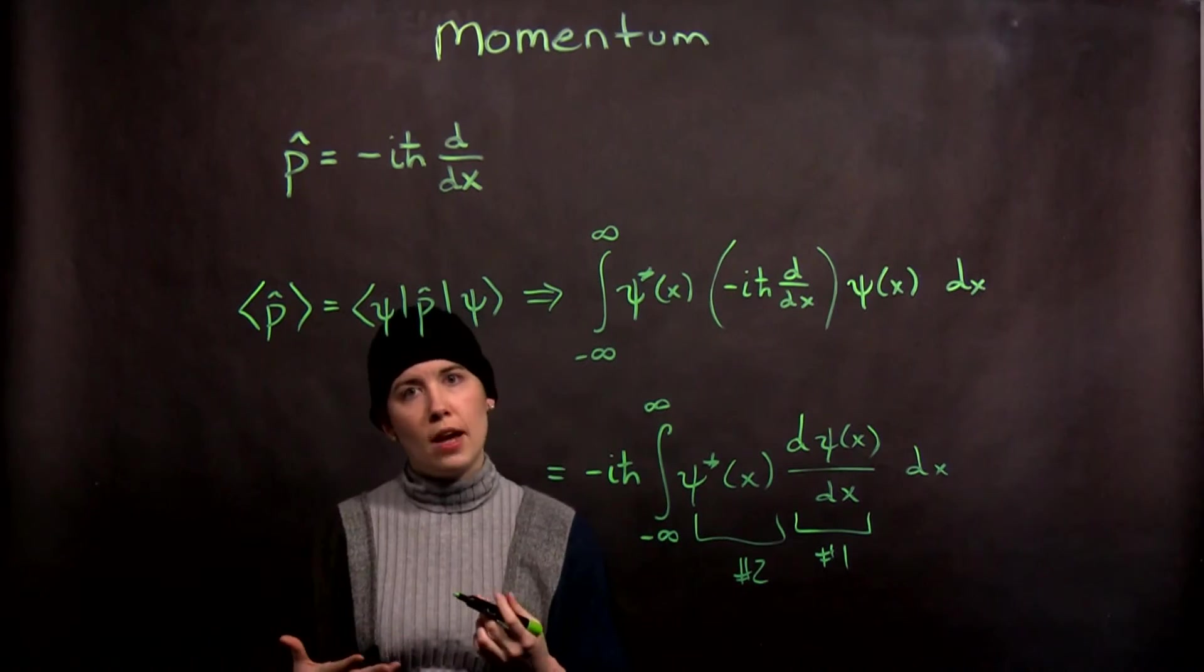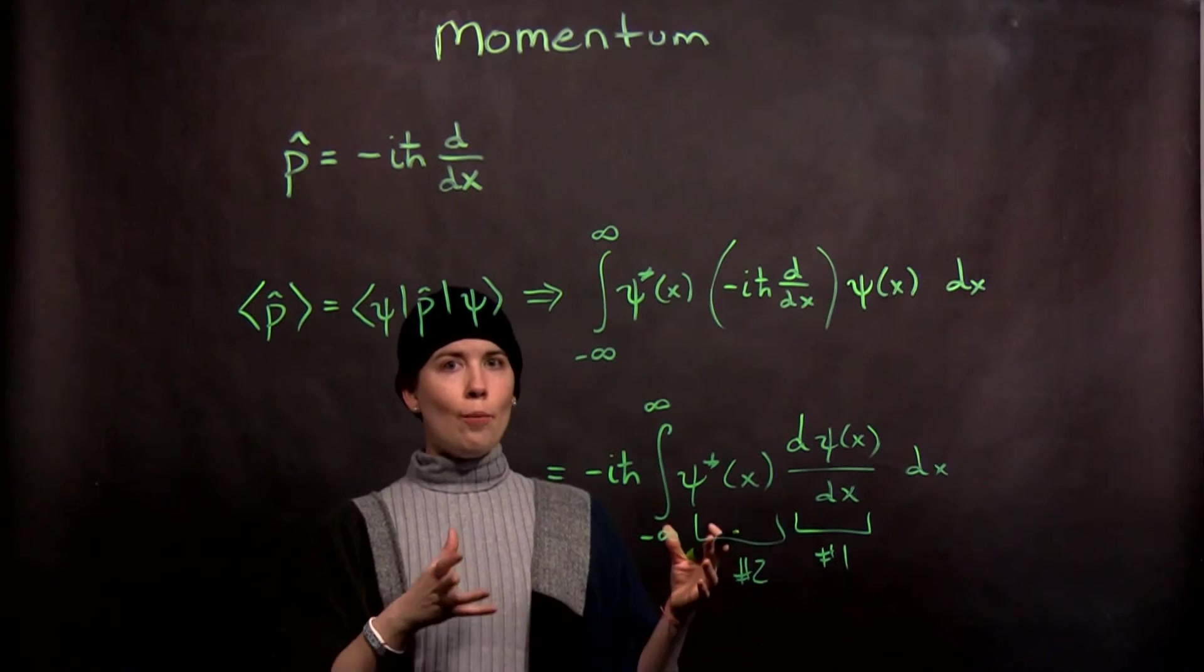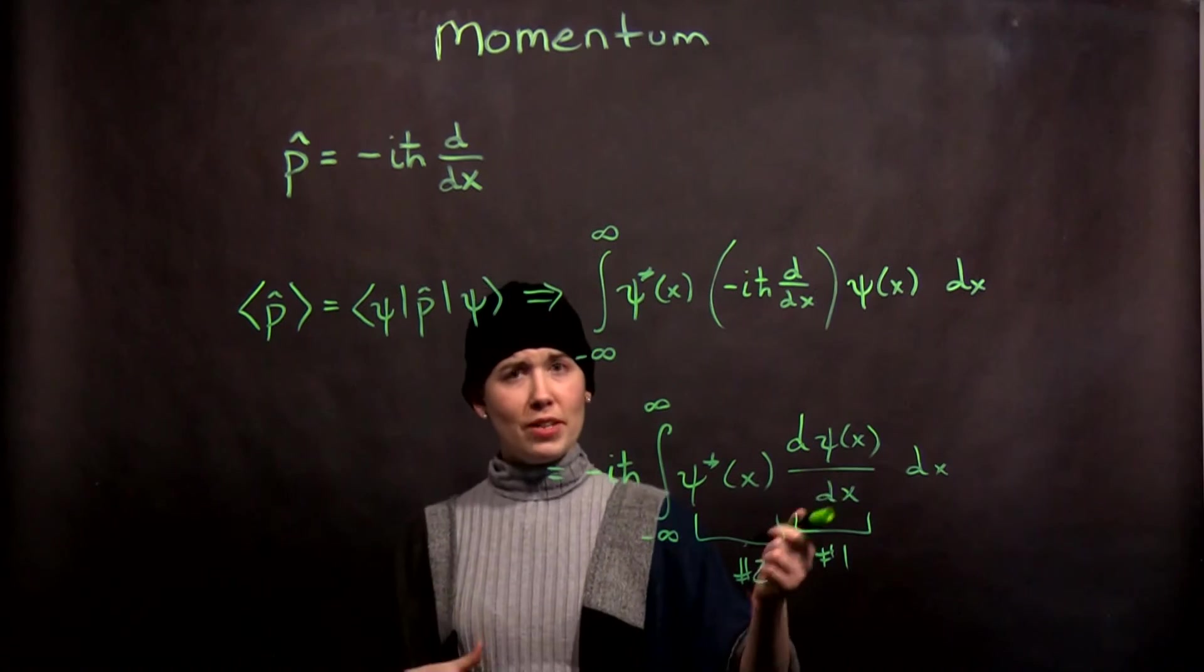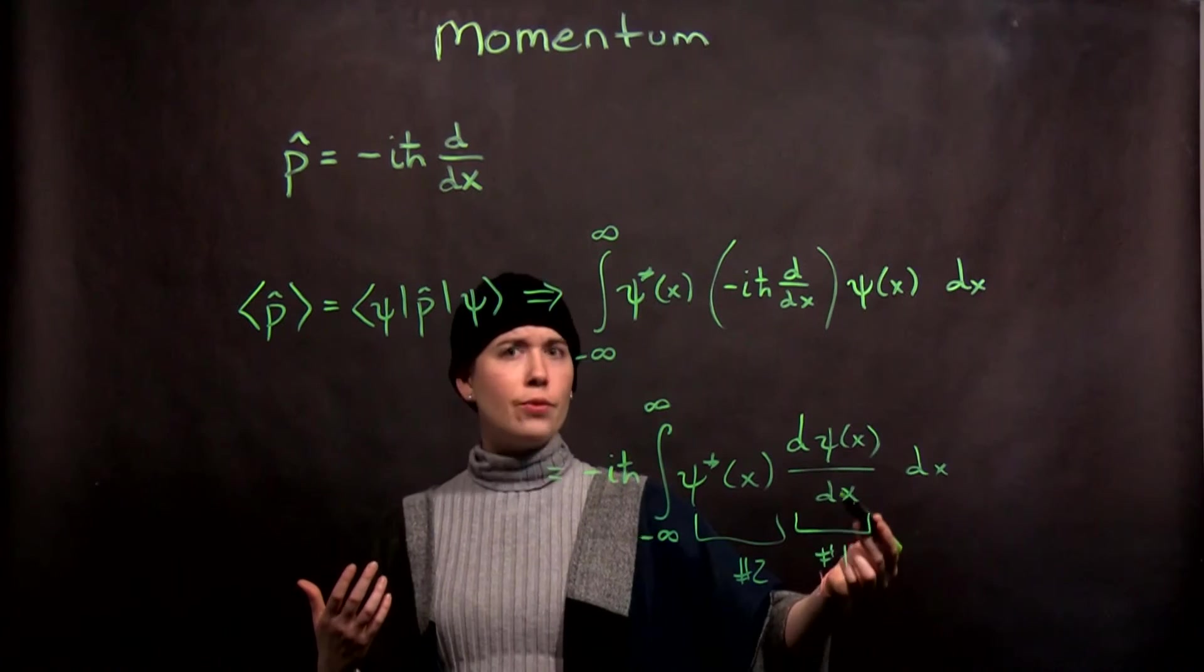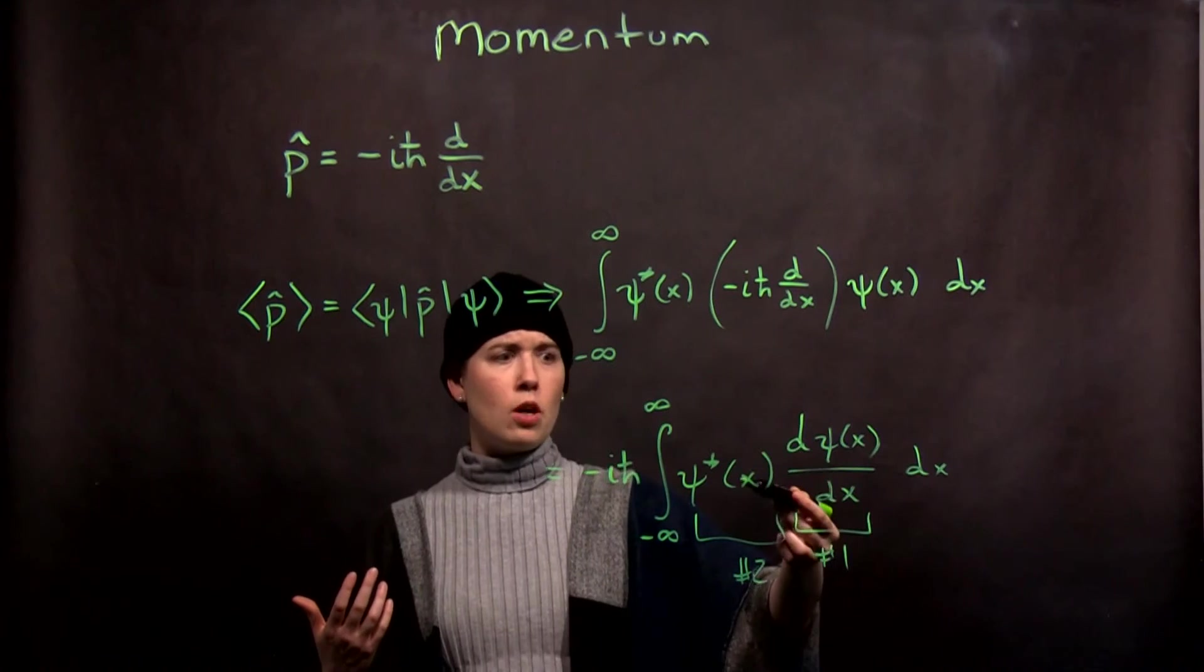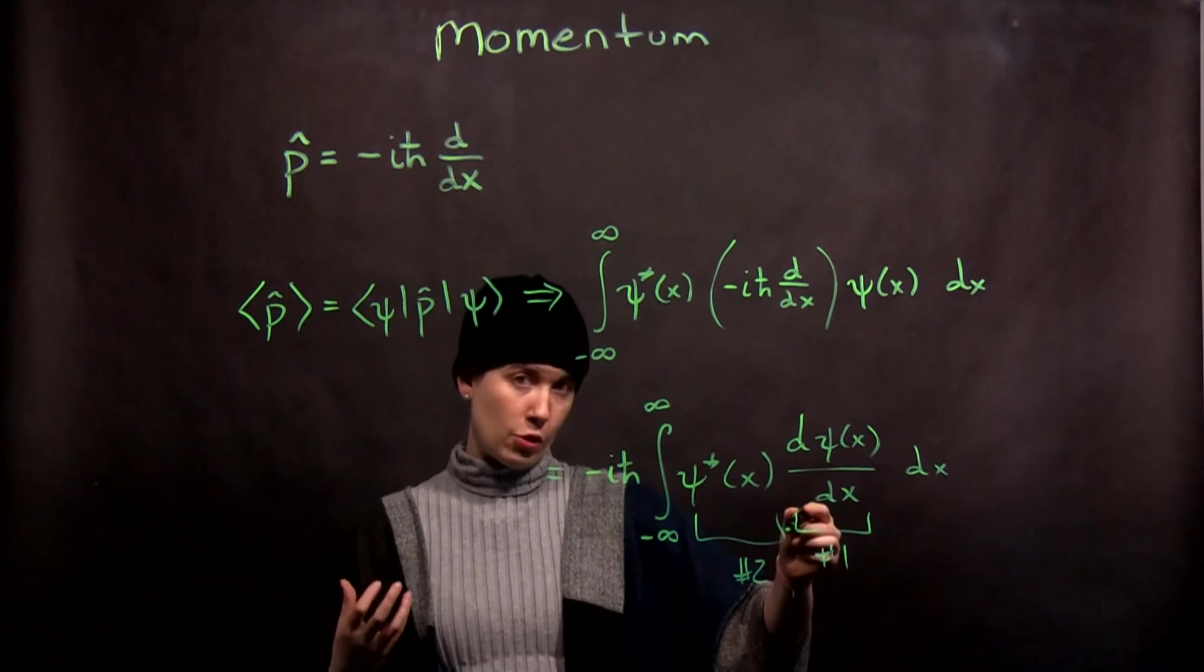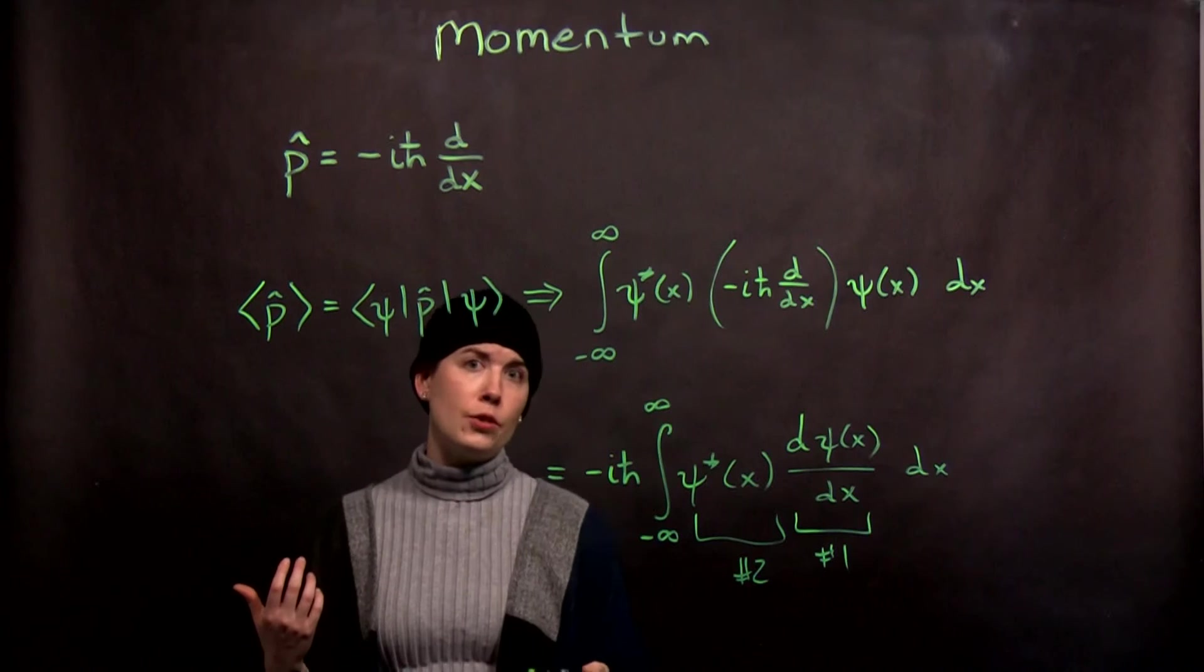So we actually have to have a specific function for our psi before we do anything here. But what you can hopefully see is there's going to be a lot of calculus. Again, some derivatives and then some integrals. And because we're actually taking the derivative and then multiplying by its own complex conjugate, this can become a pretty complicated function. Complex, if you will. And so you need to do some complicated integrals.